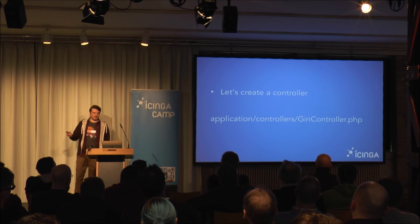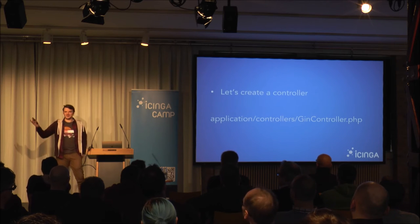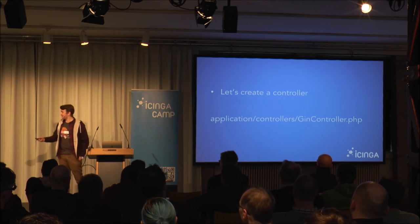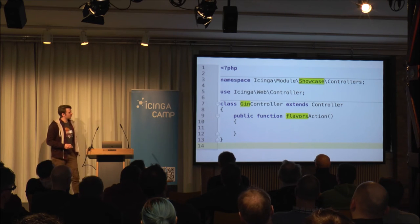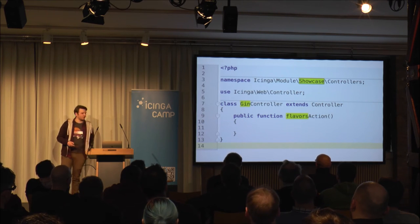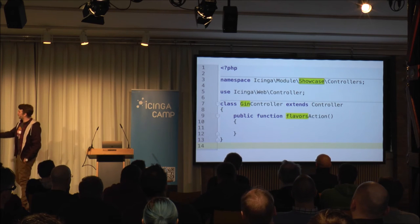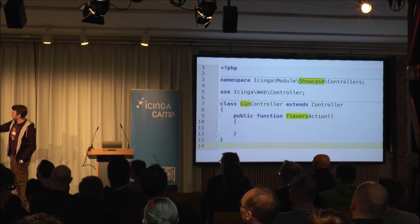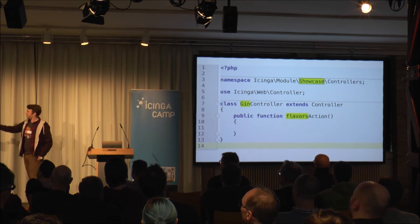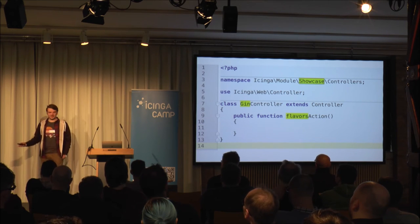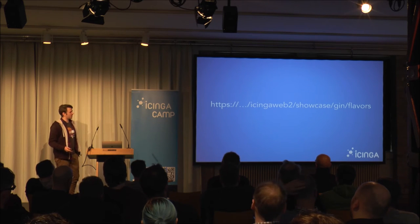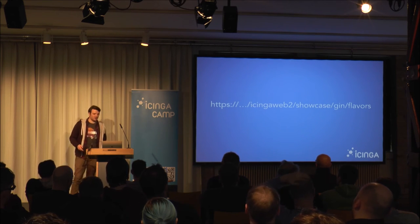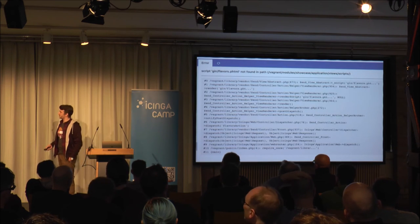So let's create a controller. Since we all like gin, we need a gin controller. I highlighted the module name, controller name, and action name — so we have our module 'showcase', our controller 'gin', and action 'flavors'. This is about all it takes to have your own route in Icinga Web 2. When we browse to this URL we get a message that a view script is missing.